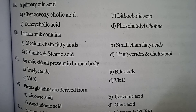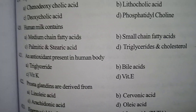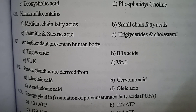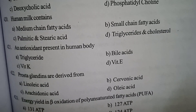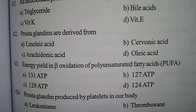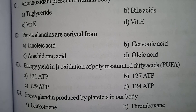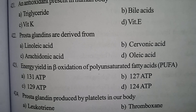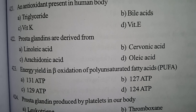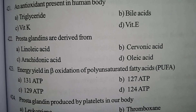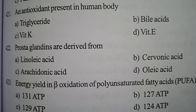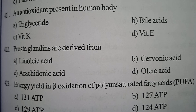Next one: prostaglandins are derived from — option A linoleic acid, option B cervonic acid, option C arachidonic acid, option D oleic acid. Correct answer: option C, arachidonic acid.